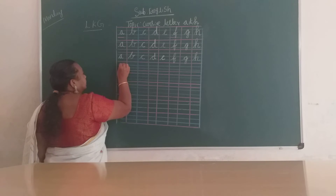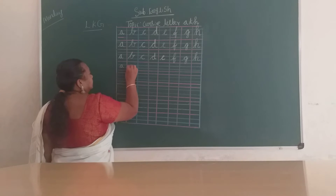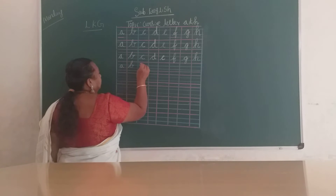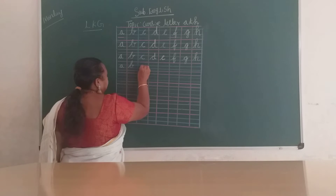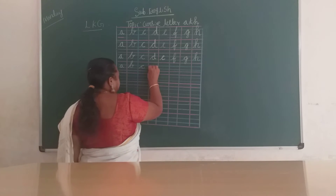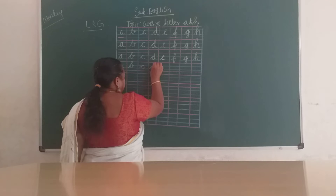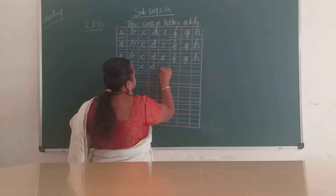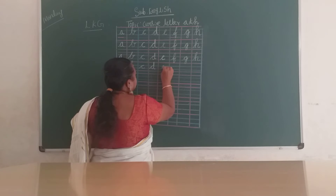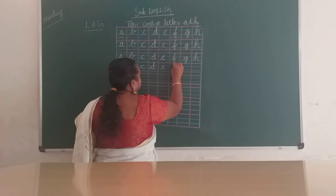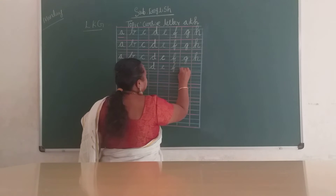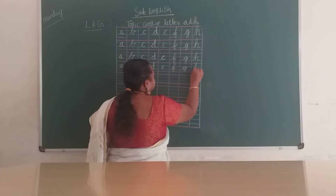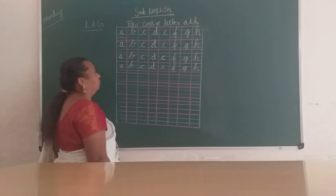Slanting line, circle — A. Slanting line, touch red line — B. Slanting line, circle — C. Slanting line, circle, touch red line, down blue line — D. E. G. H. What is this? A to H.